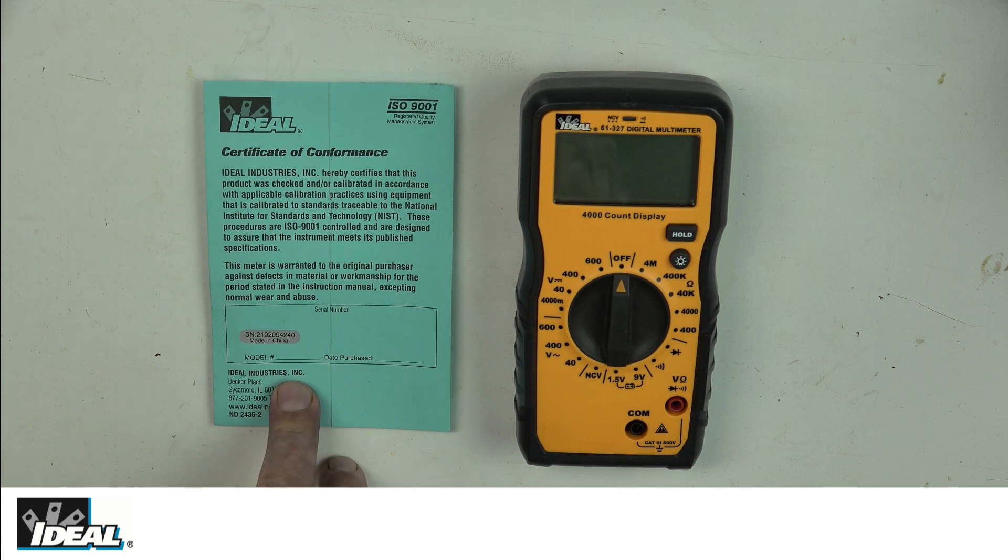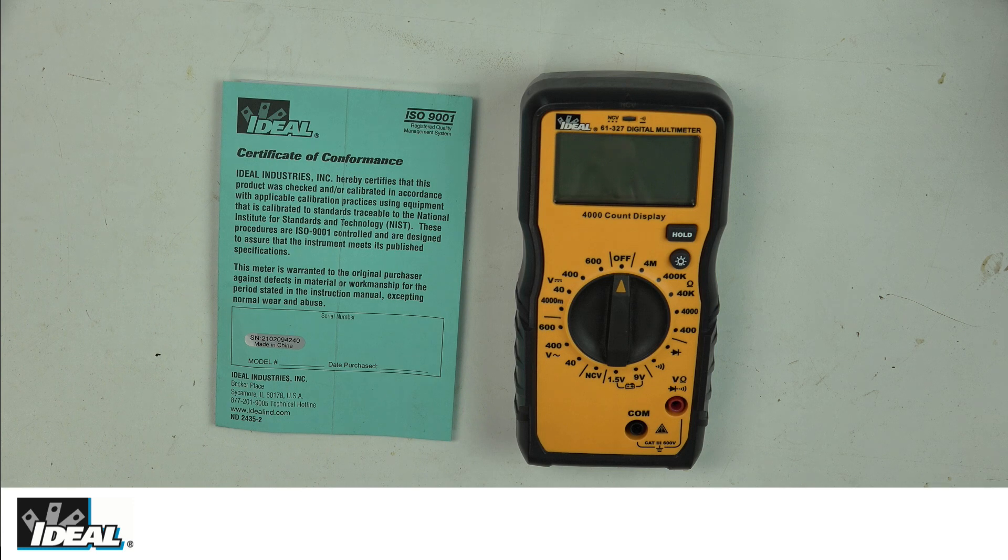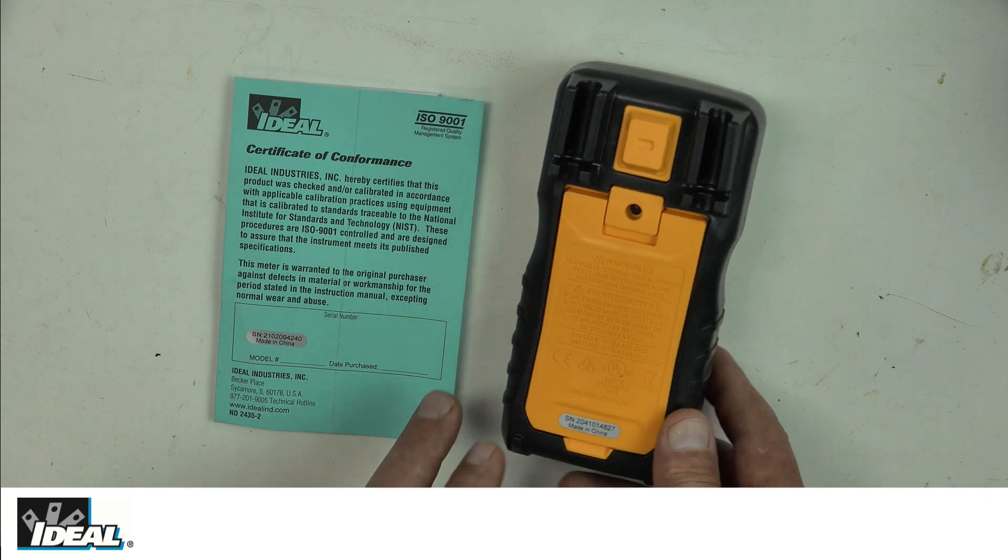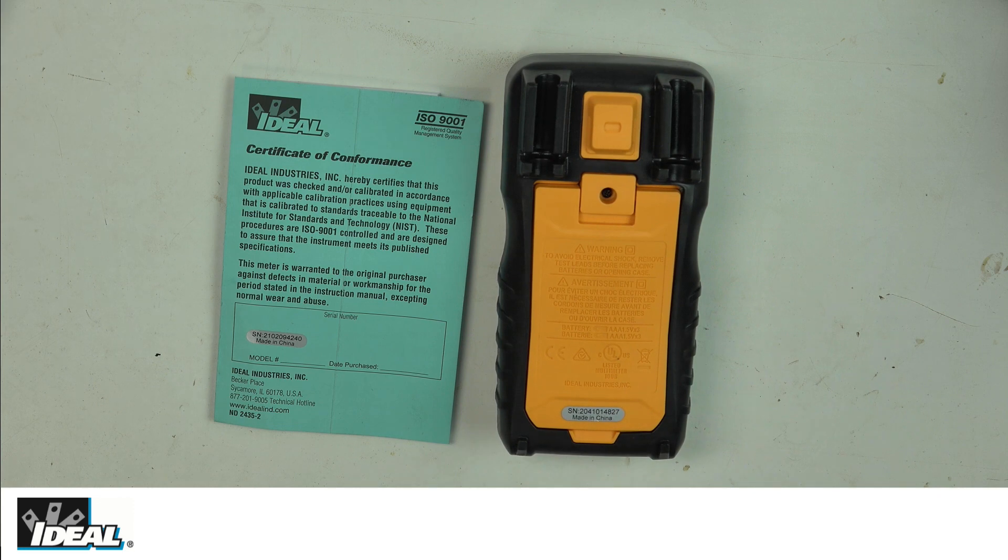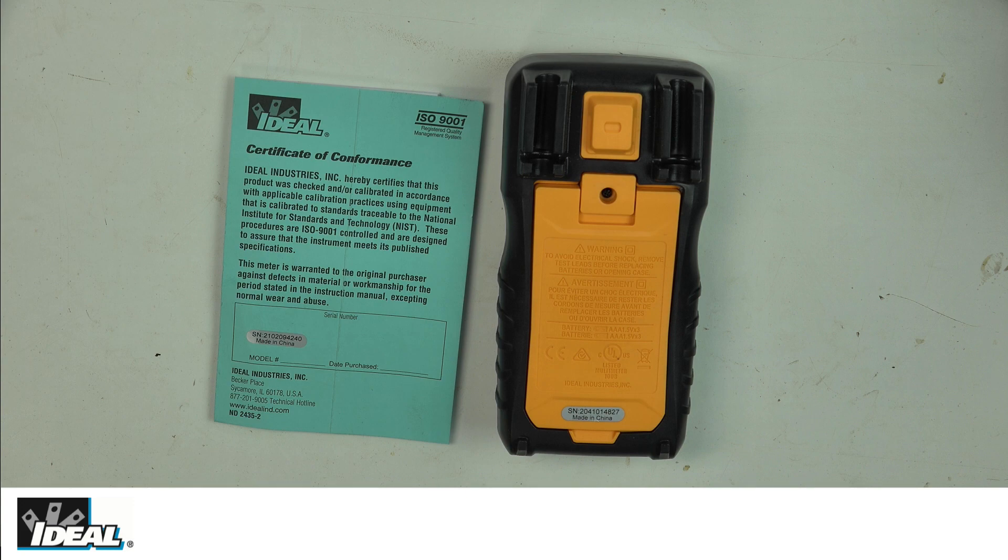You also will receive a certificate of compliance that basically states the tester was tested during its manufacturing and meets or exceeds our published specifications. You'll see a serial number on that as well as on the back of the tester. The testers carry a two-year warranty from date of purchase, so hang on to your receipts.